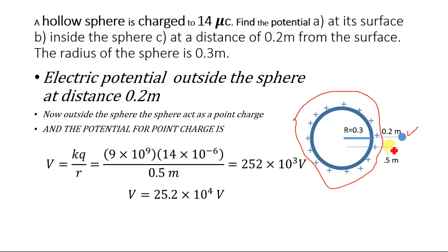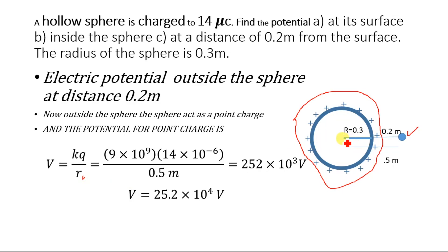When we go away from the sphere, the electric potential decreases, and when we go closer, the electric potential increases. For this situation, the point is outside the sphere, so we use V equals kq divided by r, where this small r is the distance from the center of the sphere to the external point.